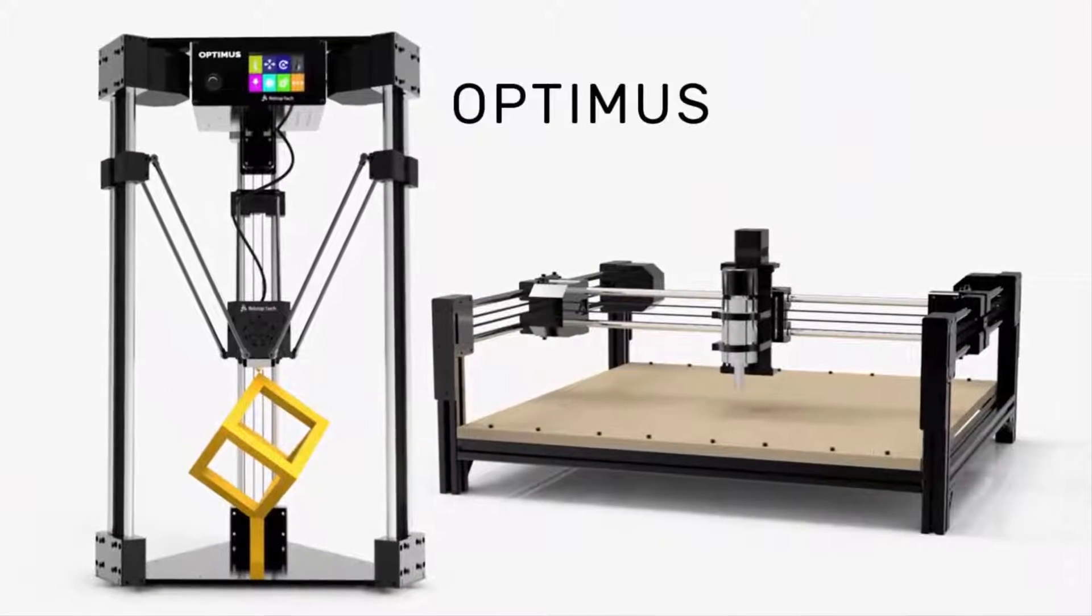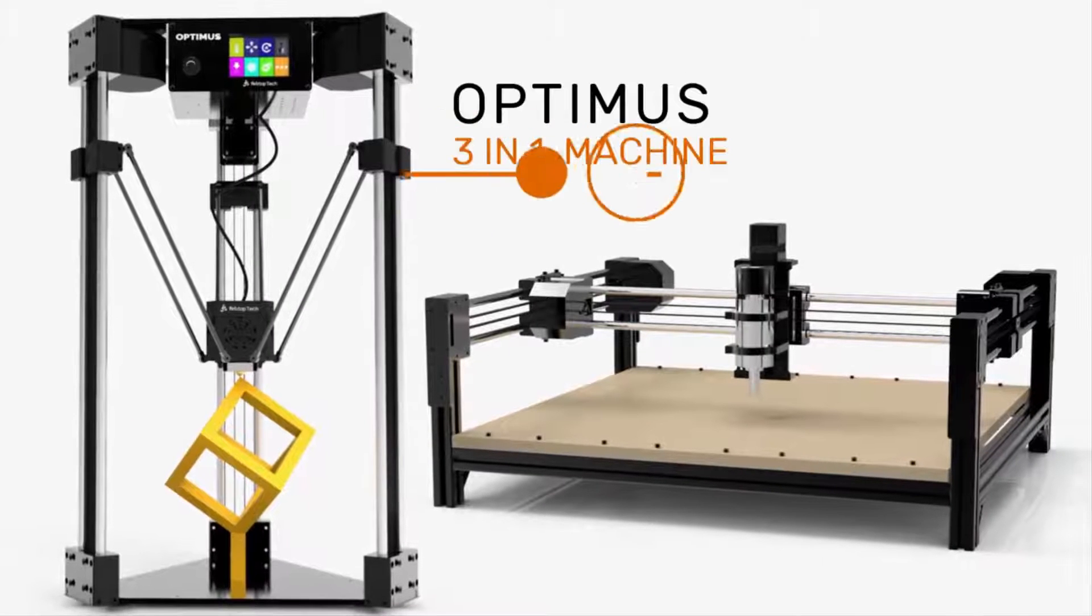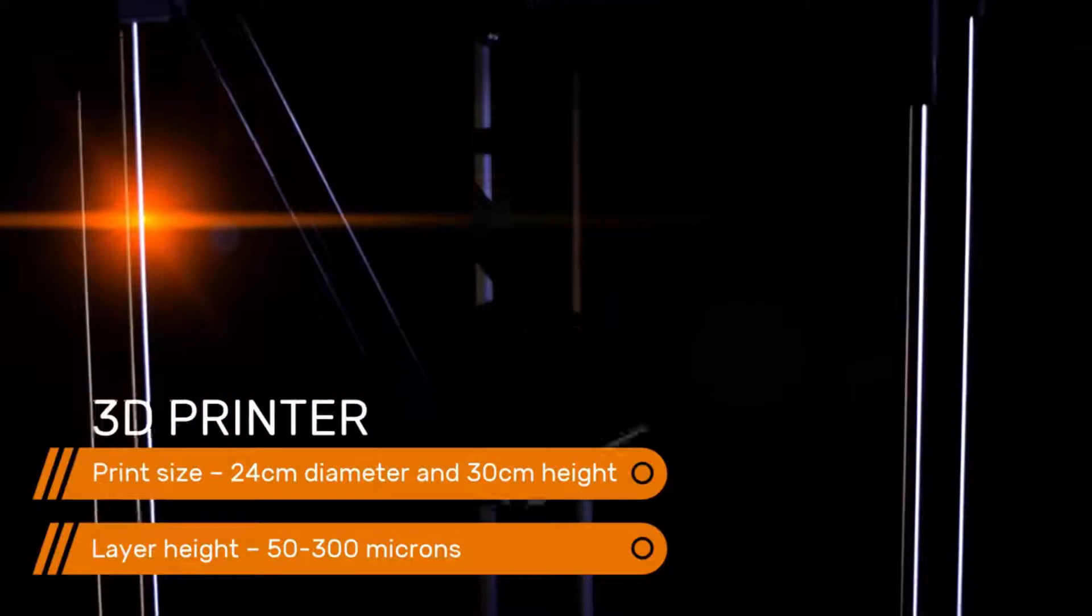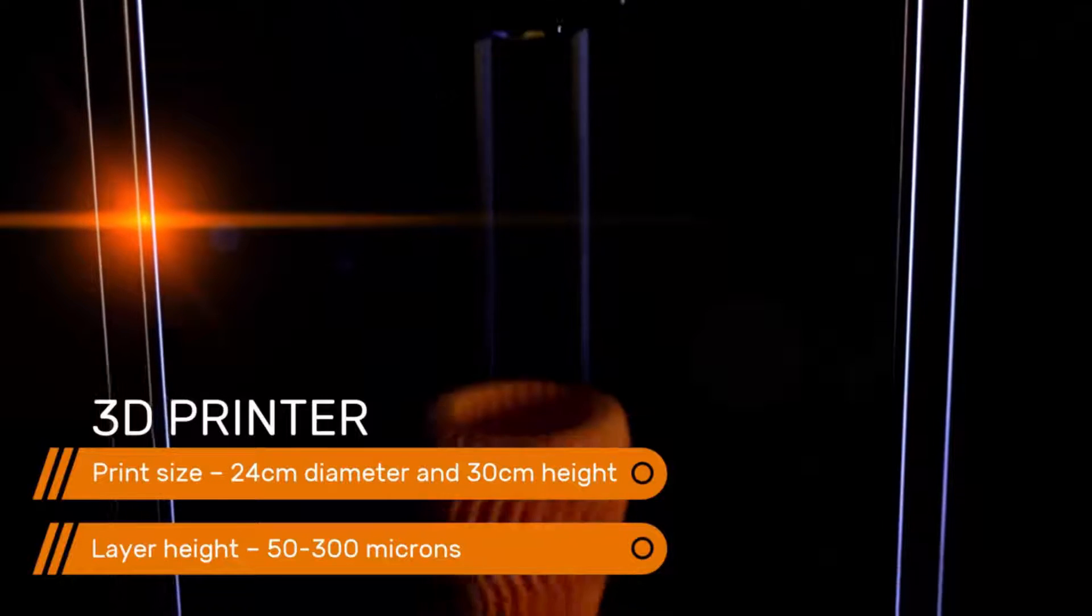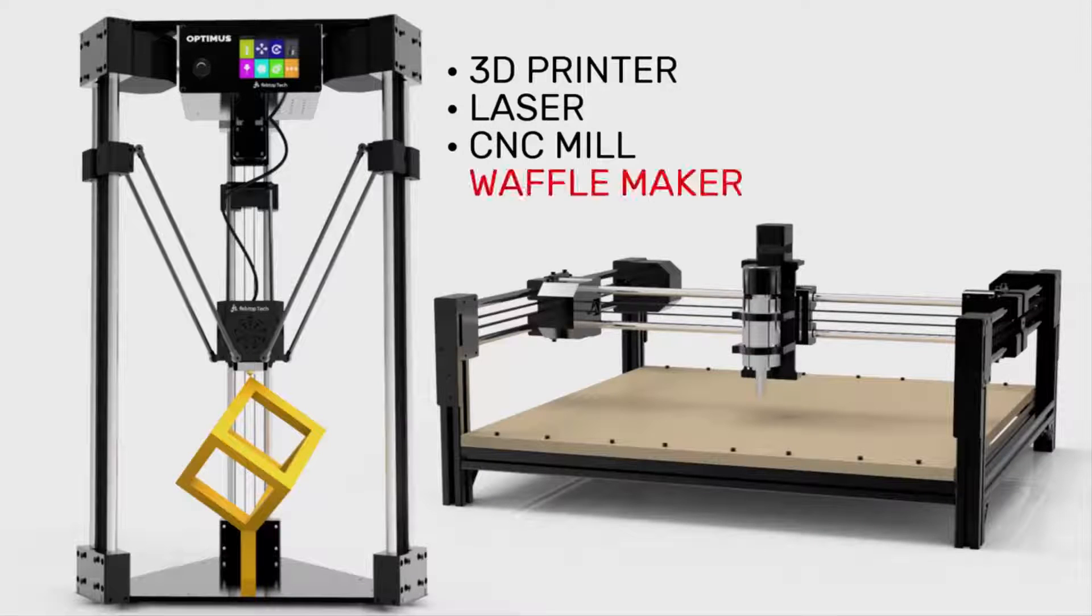This is the new Optimus. The Optimus is a modular 3-in-1 machine that includes a 3D printer, a laser, and CNC mill. It assembles into two configurations and creates finished products. This machine can make anything except waffles.